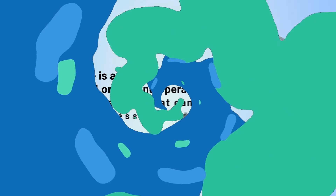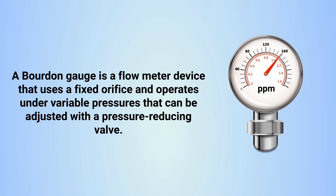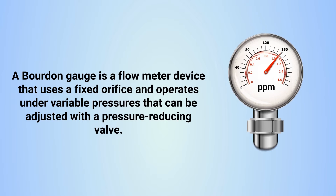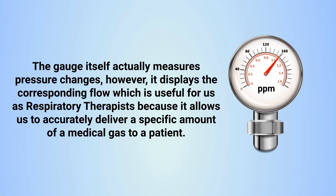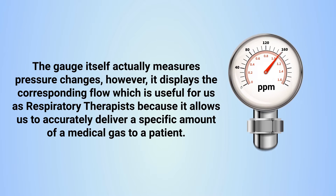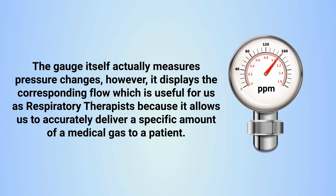A Bourdon gauge is a flow meter device that uses a fixed orifice and operates under variable pressures that can be adjusted with a pressure reducing valve. The gauge itself actually measures pressure changes, but it displays the corresponding flow — which is useful for respiratory therapists because it allows us to accurately deliver a specific amount of a medical gas to a patient.